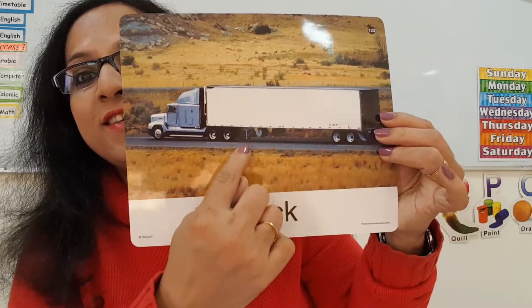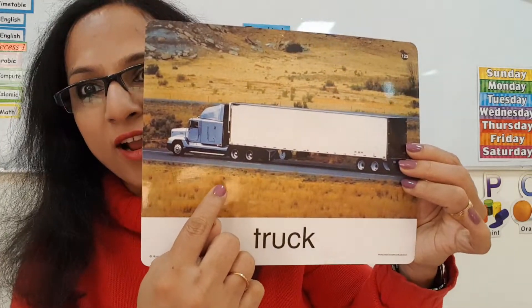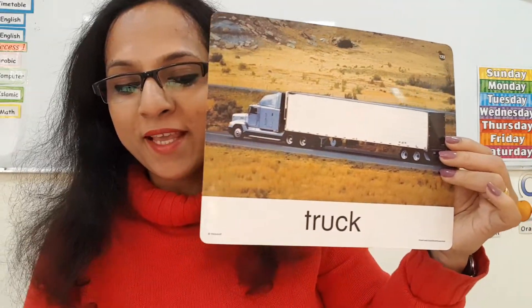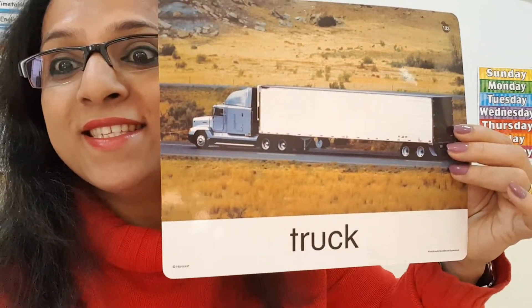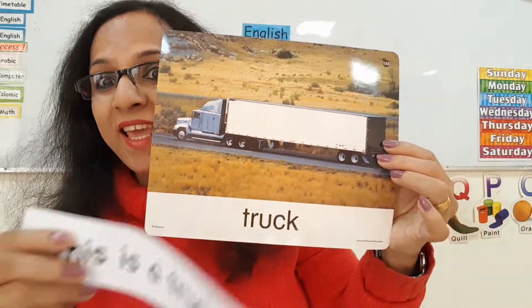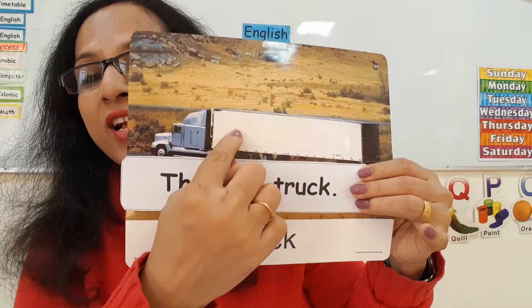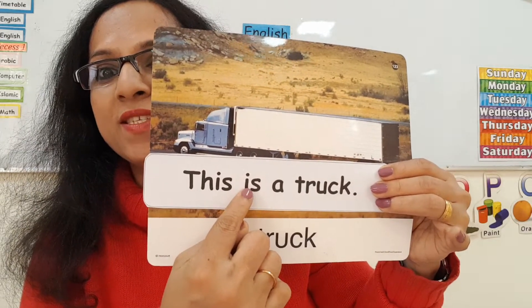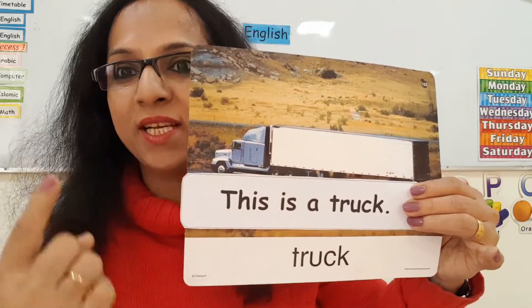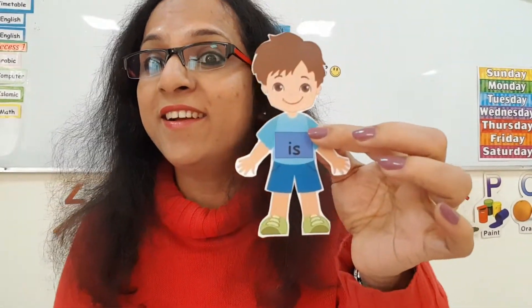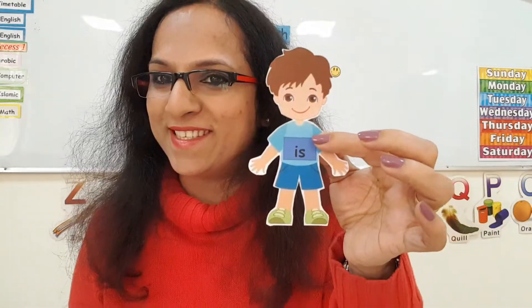Let's see another picture. What is this? This is a truck. How many trucks are there? Only one. We can make a sentence: 'This is a truck.' Only one truck, so IS is going with one singular object. IS has a great bonding with all singular objects.